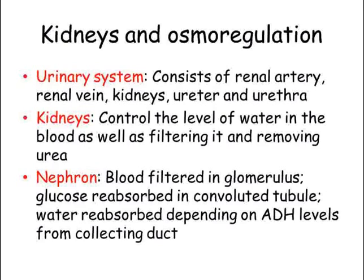Inside the kidney are many thousands of microscopic nephrons, which are little filtering systems. Blood is filtered in the glomerulus and the filtrate is collected by the Bowman's capsule. Glucose is reabsorbed in the first convoluted tubule, before the remaining filtrate passes through the loop of Henle and another convoluted tubule, before entering a collecting duct. Here water is reabsorbed depending on how much ADH has been released, and through this negative feedback system water levels are kept at a constant level.